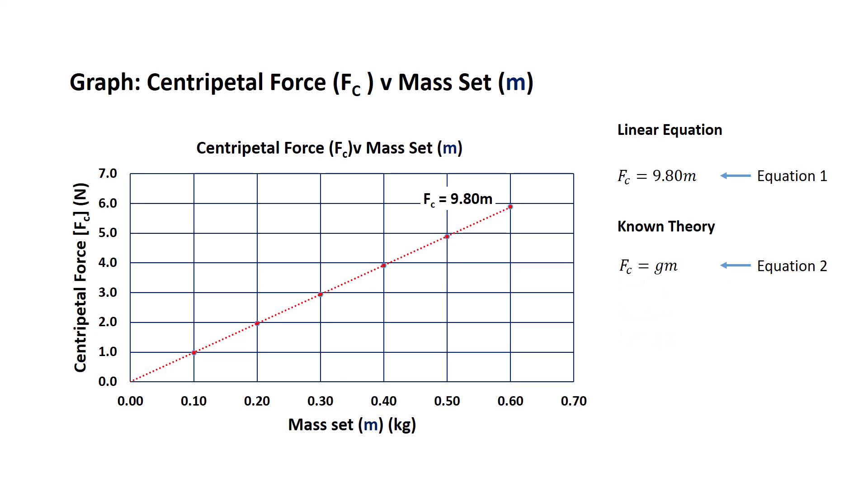Now we have an equation from our actual data linear equation, Fc equals 9.80 times m, where m is the mass of the mass set, and we also have from our known theory, Fc the centripetal force is equal to g times m. Observant viewers will see that the left hand side of equation one is equal to the left hand side of equation two. Both equations have Fc, the centripetal force, on the left hand side. So if the left hand sides of both equations are equal,